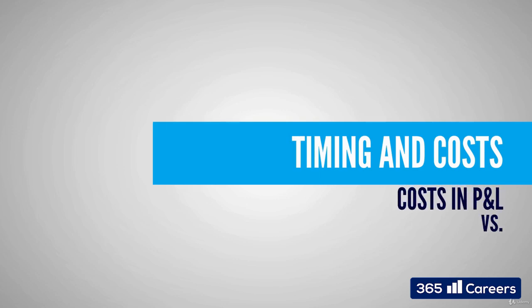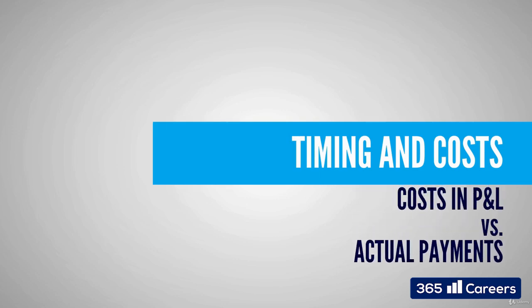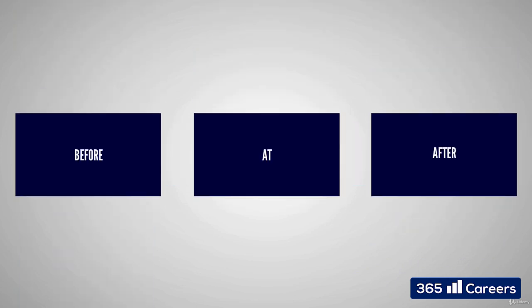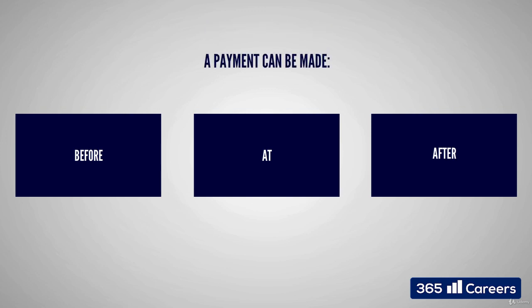In our previous lesson, we saw that income does not equal cash. Now we'll see that a similar observation can be made for expenses. Expenses that we see in the income statement are recorded during the period in which they are incurred, regardless of when the transfer of cash occurs. Similar to what we saw for revenues, cash can go out at, before, or after we recognize an expense.